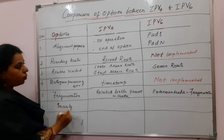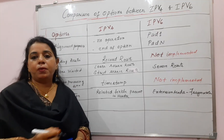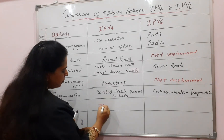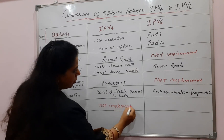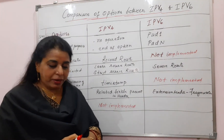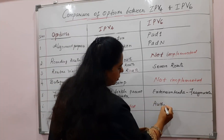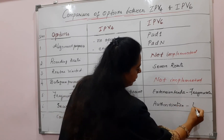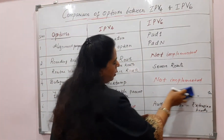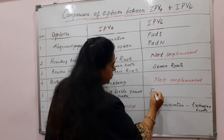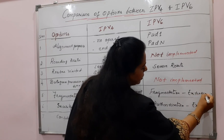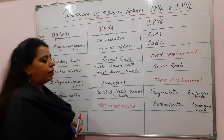With respect to security, in IPv4 there is no field to demonstrate the idea of security, so it is not implemented. In IPv6, there is a field for security and the extension header name is Authentication. Always try to write the extension header name first and then note that it is not a field in the main header but is an extension header.